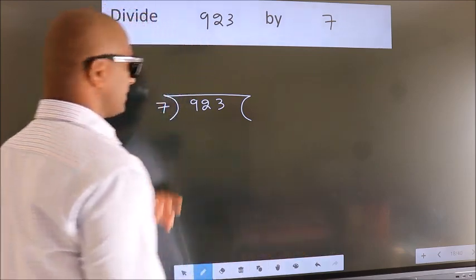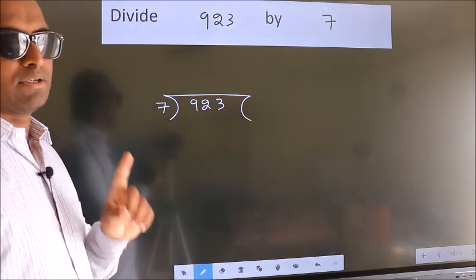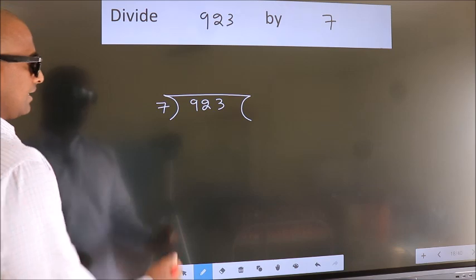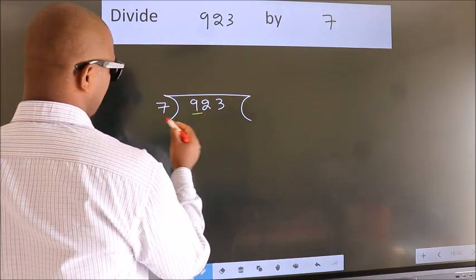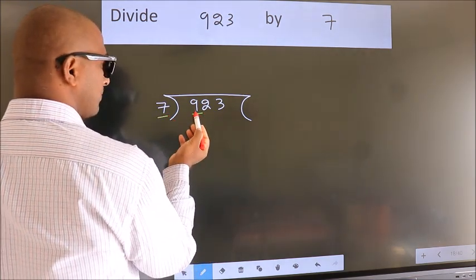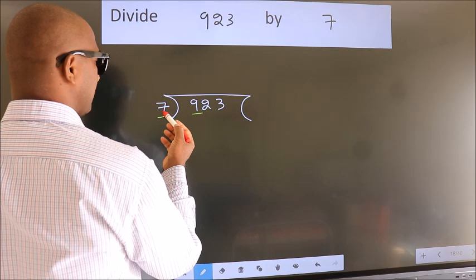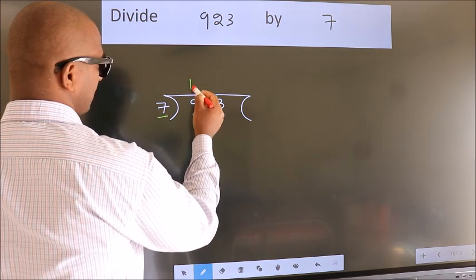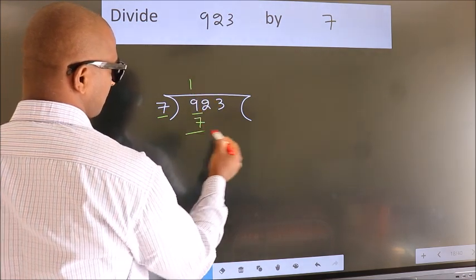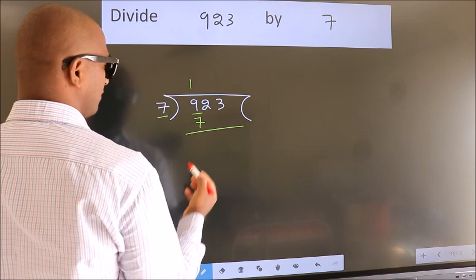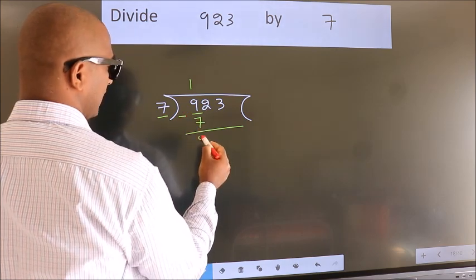This is your step 1. Next, here we have 9, here 7. A number close to 9 in the 7 table is 7 once 7. Now we subtract. We get 2.